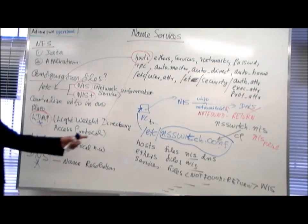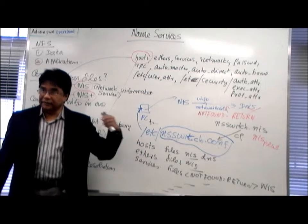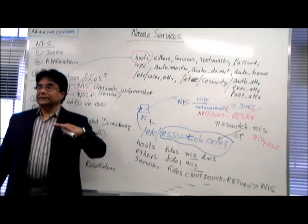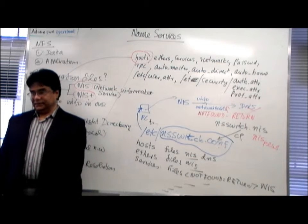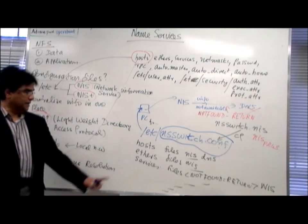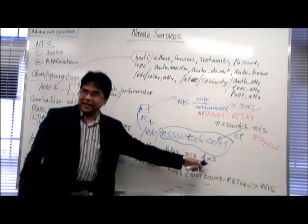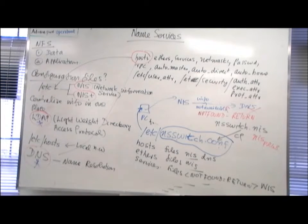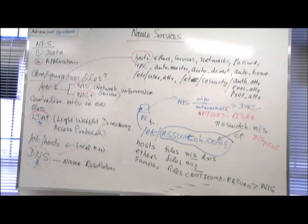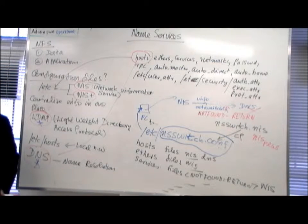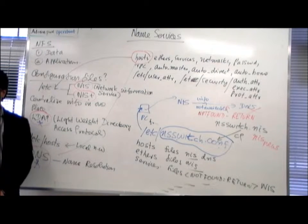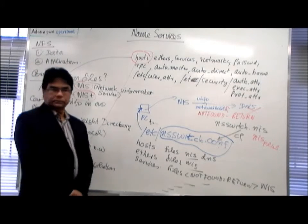So this NSSwitch.conf file only has information about the way to access information requested by the client — first access this, then second access this, then third access that. That is the significance of this file.